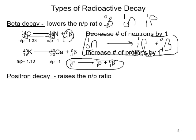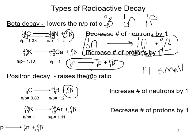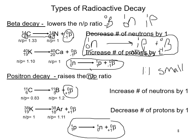Positron decay raises the neutron-to-proton ratio. Small atoms ideally have a 1:1 neutron-to-proton ratio, but very heavy nuclei need more neutrons because too many protons repel each other — extra neutrons between them increase stability. In positron decay, a positron is ejected from the nucleus; for example, carbon is transformed into boron with an increase in neutrons. In the small reaction, a proton is converted into a neutron, with the positron ejected as positron radiation.